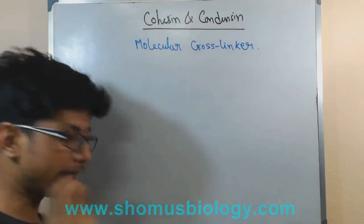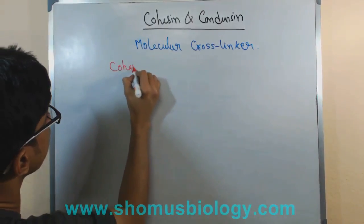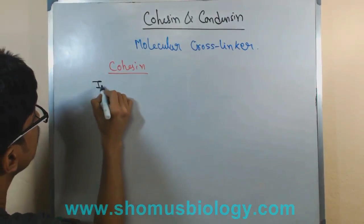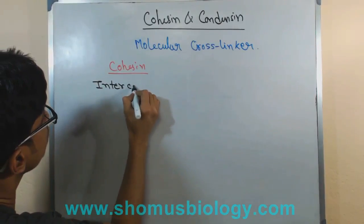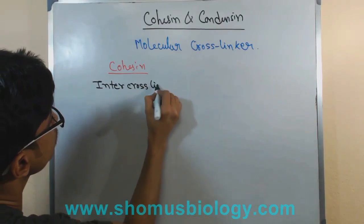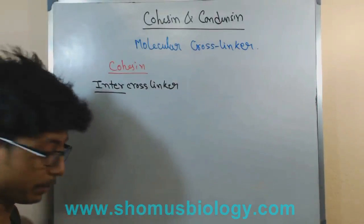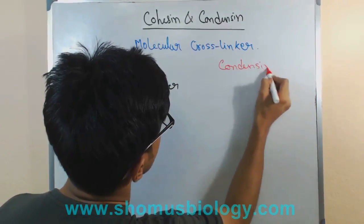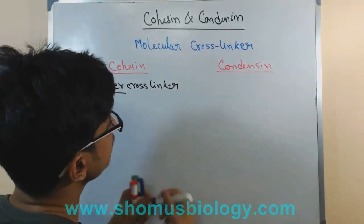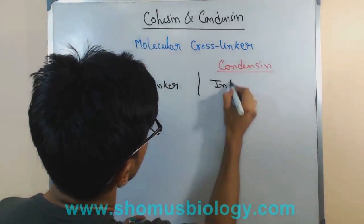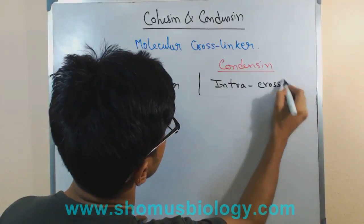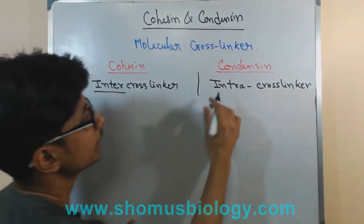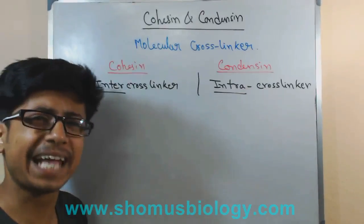If you look at cohesin, cohesin is a type of inter cross-linker. On the other hand, condensin is an intra cross-linker. That is the biggest difference — cohesin: inter; condensin: intra. Now, what does that actually mean?